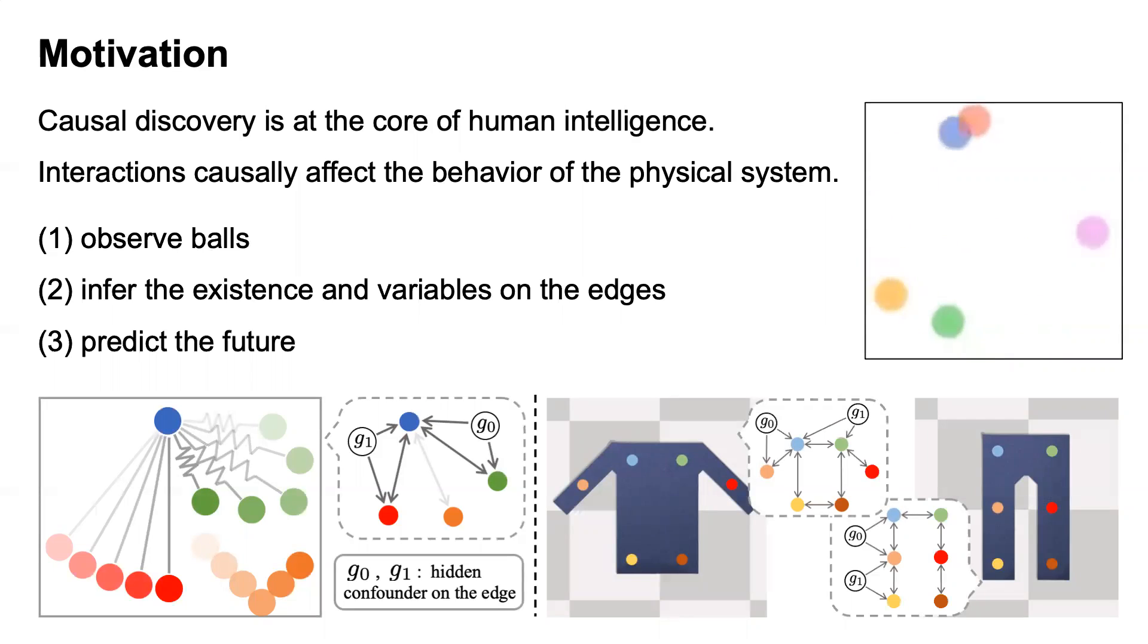Similarly, in the cloth environment shown on the bottom right, we can find a reduced order representation and then determine the causal relationship between them to reflect the topology of the cloth.